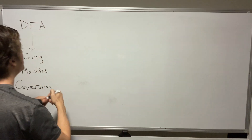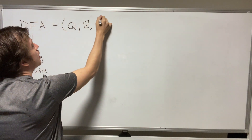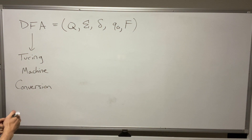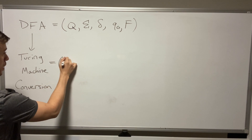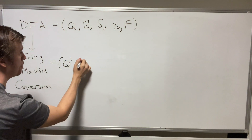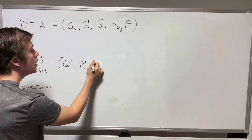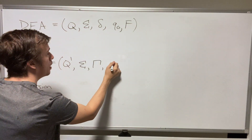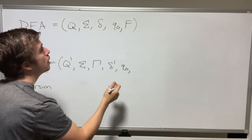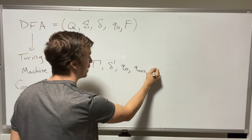Let's look at this in a completely formal way and then do an example. Say the DFA is a tuple of states Q, input alphabet Σ, transition function δ, start state q₀, and final states F. For the Turing machine, we need to define a set of states — which may differ — but the input alphabet must be exactly the same because we want the same language. The tape alphabet we'll define shortly, with a different transition function. The start state stays the same, but the final states don't translate over; instead we'll have an accept and reject state.